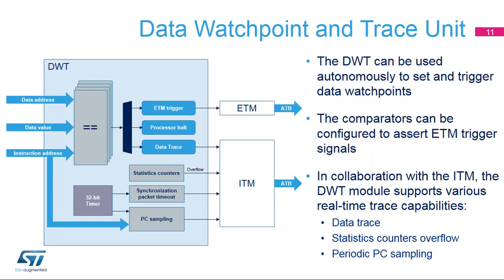The DWT supports more features than just implementing data watchpoints. The four comparators on the left of the figure detect a match condition on either a data address or an instruction address. Comparator number one can also be configured to detect a match condition on a data value. The following actions are supported when a match condition occurs: halting the core (the watchpoint feature), asserting a trigger signal to the ETM, or generating a trace packet to report the data access and passing it to the ITM for export. The current data and PC value can also be captured to complement the trace information. Complex conditions mixing address and data comparisons are programmable.